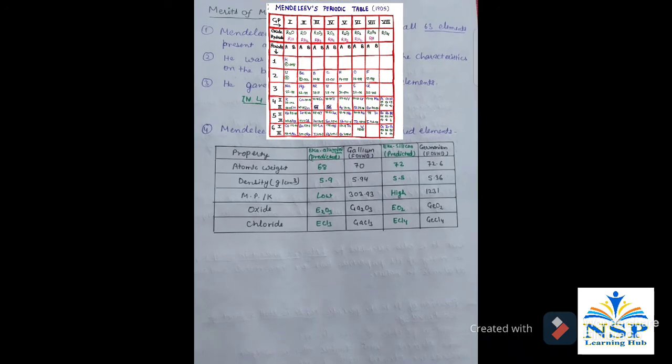Mendeleev predictions for eka-aluminum is atomic weight is 68, but gallium is found at its atomic weight is 70. Density for prediction is 5.9, but actual is 5.94. Melting point is low, which is found 302.93.